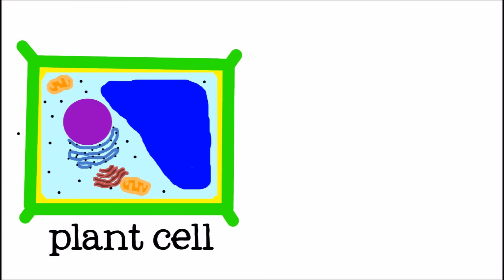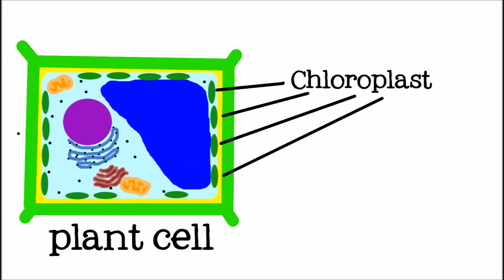Finally, let's look at the chloroplast. Chloroplasts are found only in plant cells and contain chlorophyll, the substance that allows photosynthesis to take place.